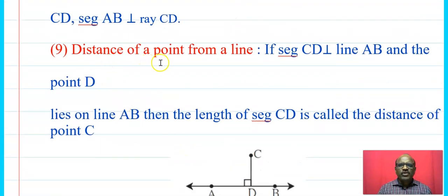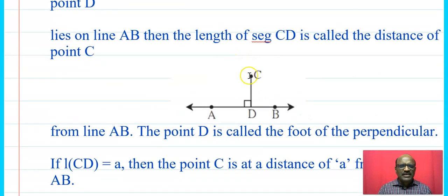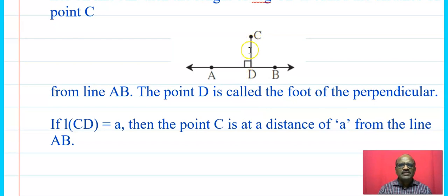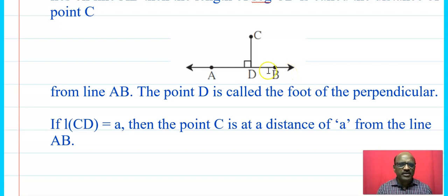Next, distance of a point from a line. If C is any point outside the line AB, draw a perpendicular from point C on line AB. Suppose D is the foot of the perpendicular. Then the length of segment CD is the distance of point C from line AB. In this way we can find the perpendicular distance of a point from a line.